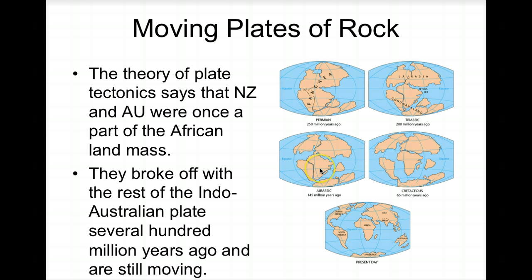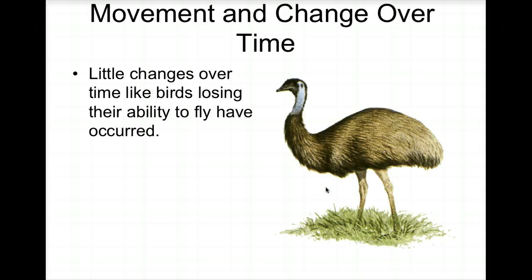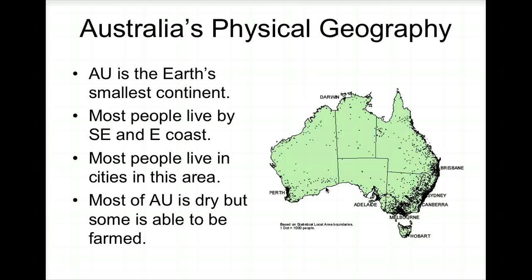Australia and New Zealand broke away from the larger landmass with the Indo-Australian plate several hundred million years ago and are still moving an inch or so a year. Over time, isolated evolution led to unusual adaptations, like birds losing the ability to fly. The emu is a large flightless bird, and kiwis are found in New Zealand.